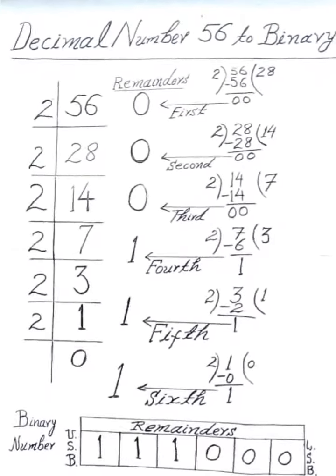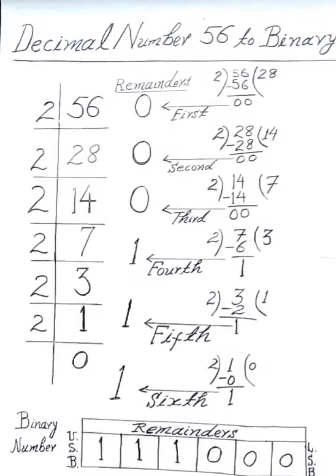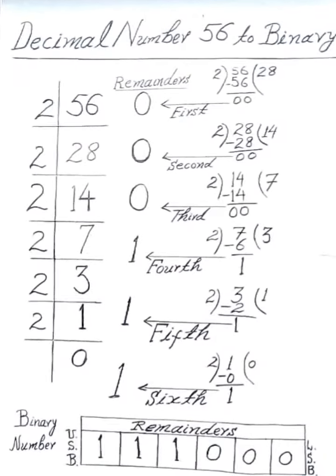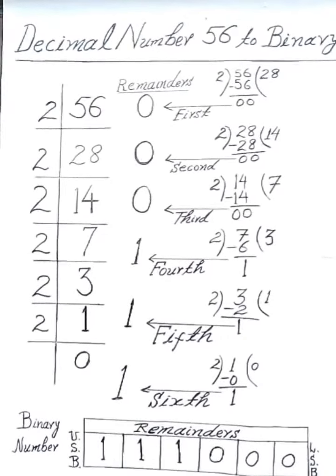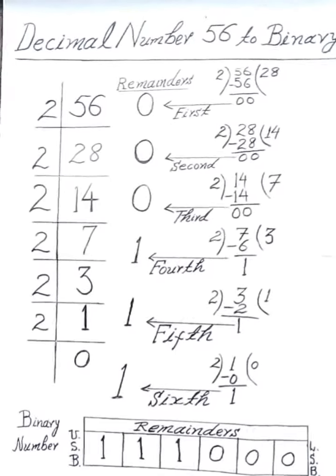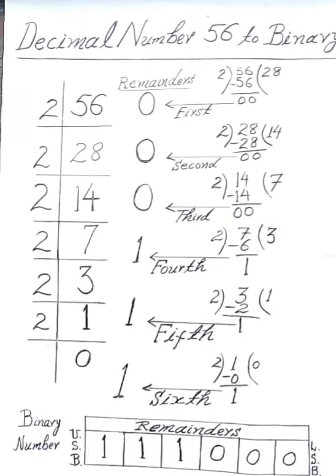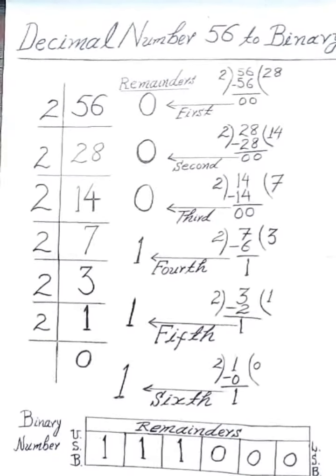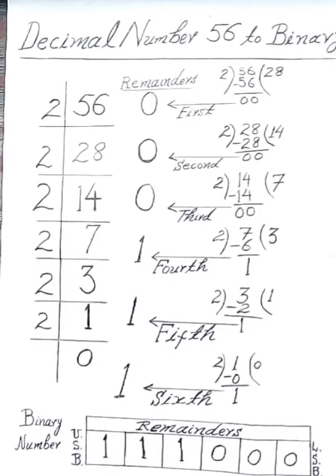Starting from the lower side bit — the first remainder — up to the sixth remainder on the upper side bit, we get the binary number 1 1 1 0 0 0. Thank you.